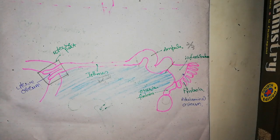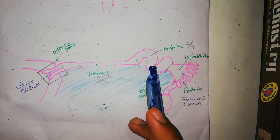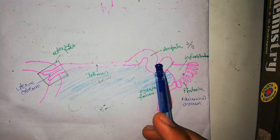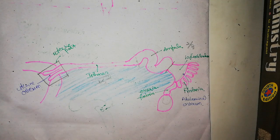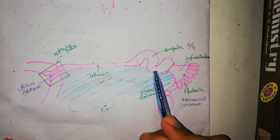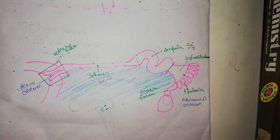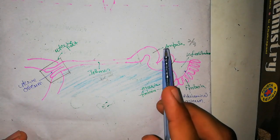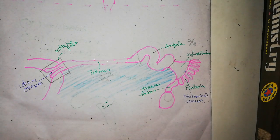This is the function of the uterine tube. Now, that is the normal function. Abnormally, sometimes the zygote which was produced here converts into an embryo and gets implanted right here in the ampulla. So ampulla is also a common site of ectopic pregnancy, which may lead to hemorrhage and ultimately death.